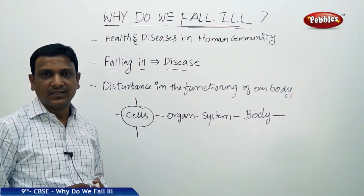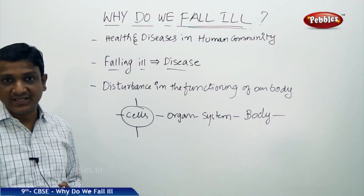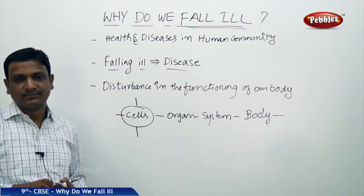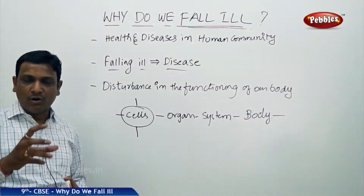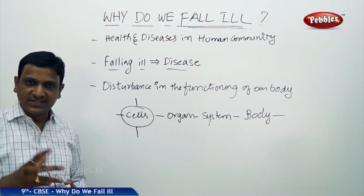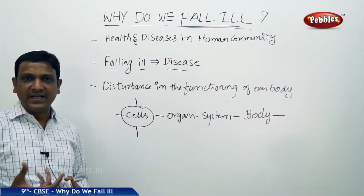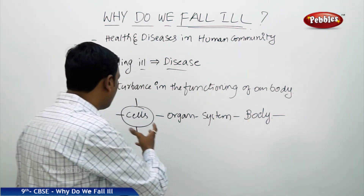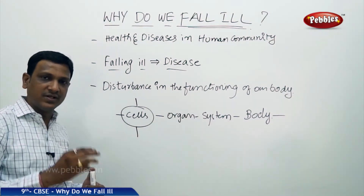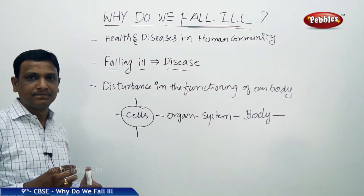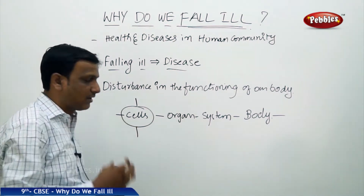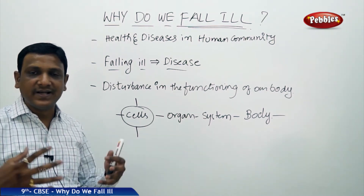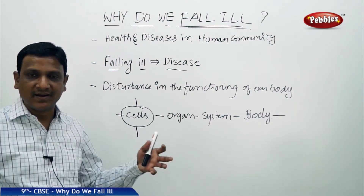For example, some malaria organisms enter the body and reach your liver, affecting a few cells of your liver. But later the organ liver is affected, then your digestive system is affected, then your blood is affected, and by that the whole body is affected. Even though the disturbance is to a specific part of your body, it will disturb the other organs because all organs and organ systems are coordinated and working together.